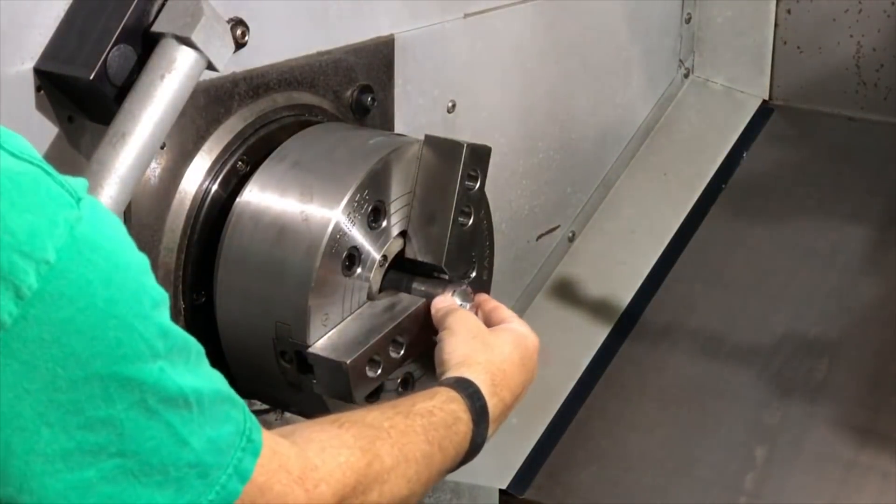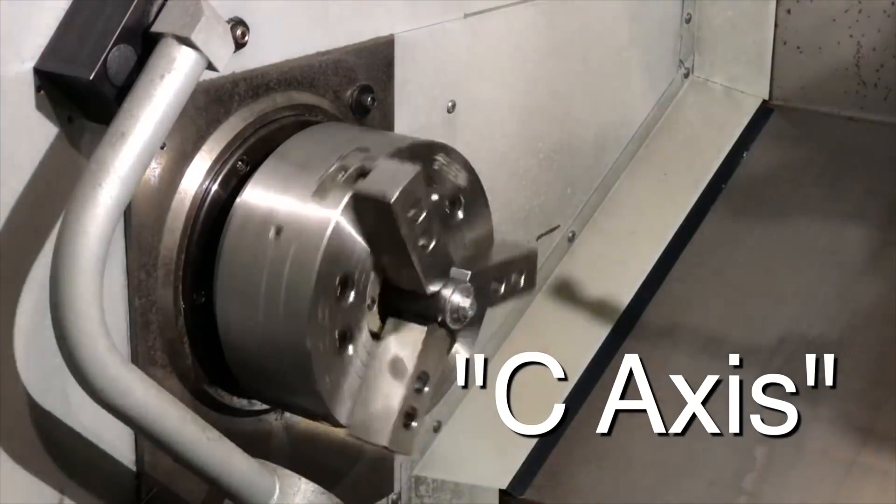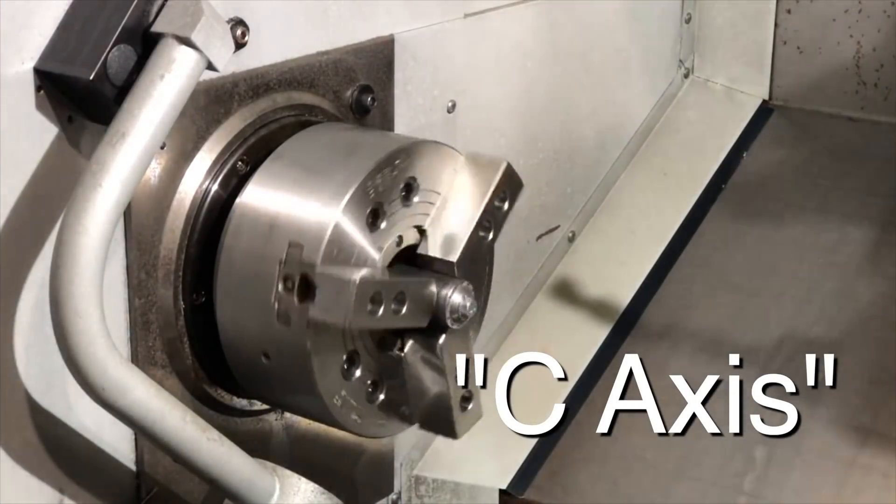Now I should point out that this doesn't just work for any old lathe. It has to have what's called a C-axis, and that's where you can control the rotational position of the spindle.